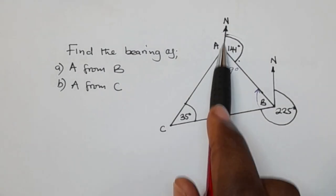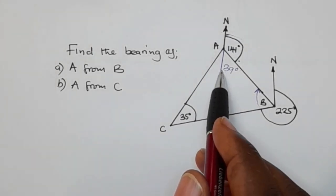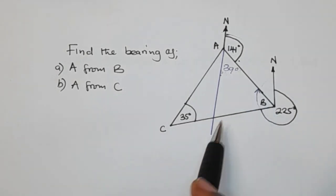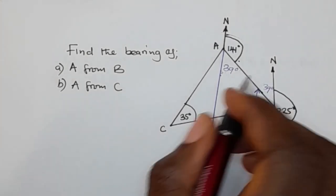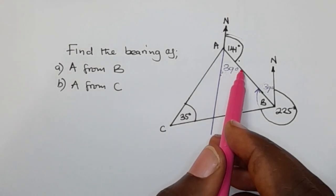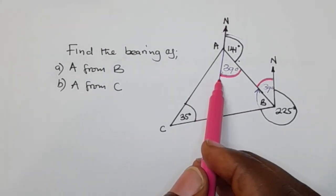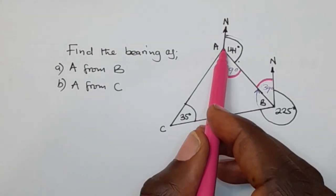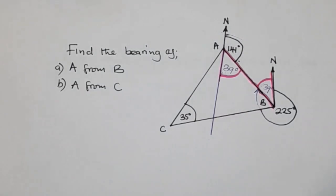Now, when you look at this north and this north, they are parallel lines. And when you observe, this angle and this angle are going to be equal — because these are alternate angles. You can see that they are forming a Z-shape, so this angle and this angle are the same — also 39 degrees.